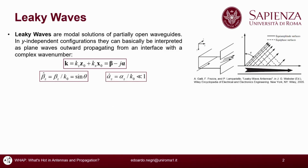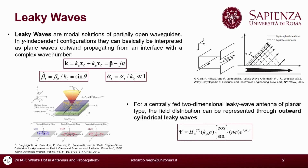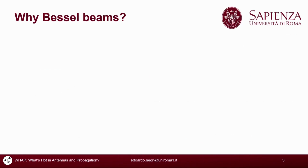While the modal field in 1D leaky wave antennas can be represented through a linear superposition of exponentials, in 2D leaky wave antennas it is given by outward and inward Hankel functions. As the superposition of exponential envelopes with the same amplitude generates sinusoidal functions, an inward and an outward cylindrical wave give us a Bessel distribution.